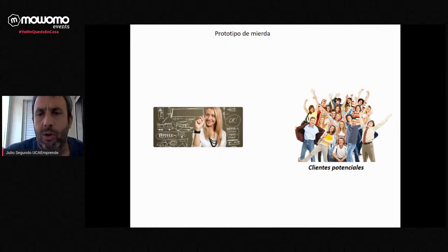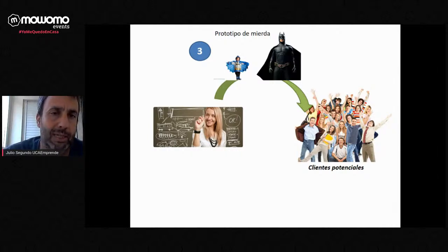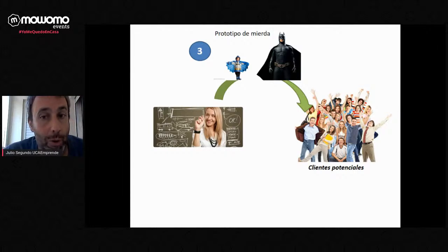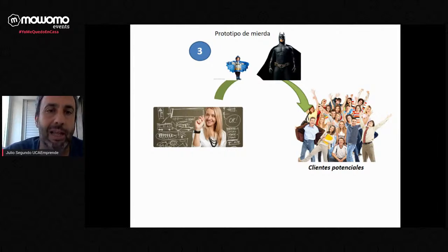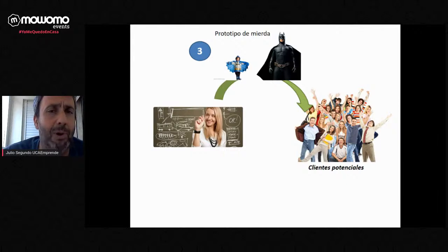Una vez que tengo claro cuáles son sus prioridades, tenemos que lanzar lo que se denomina el prototipo de mierda. Es una forma rápida y sencilla de mostrarle al cliente lo que queremos hacer. Estamos en una fase previa al producto mínimo viable. Básicamente es mostrarle al cliente qué es lo que queremos comenzar a programar, para recoger esas sugerencias iniciales y que cuando vayamos a hacer un diseño esté mejor orientado a las necesidades del cliente.